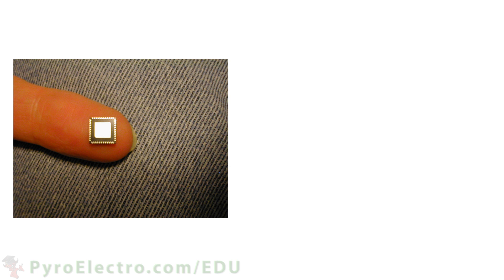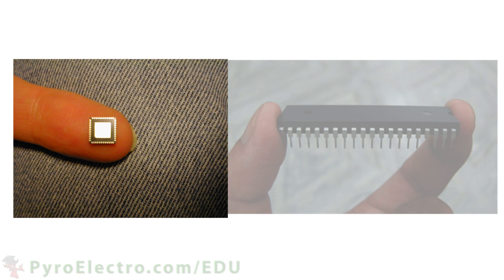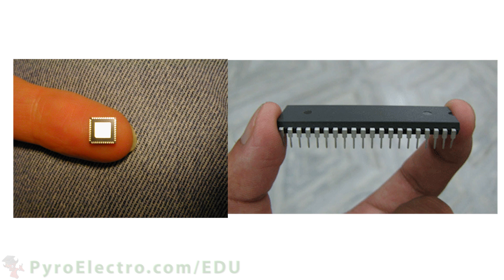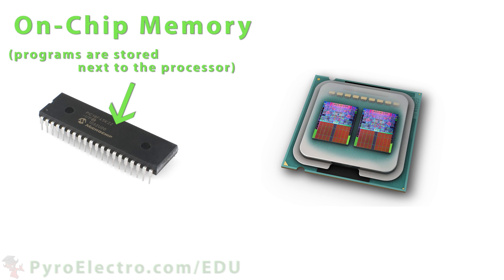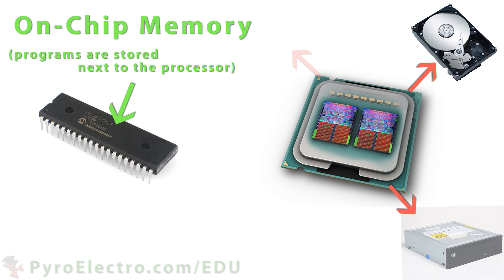Microcontrollers are a very mobile type of processor that can be as small as the tip of your finger or as large as any modern-day processor. The main difference between a modern-day processor and a microcontroller is that a microcontroller has on-chip memory, so your programs are actually stored next to the processor. Modern-day processors typically look for a hard drive, CD, DVD, or flash memory device to tell it what to do.